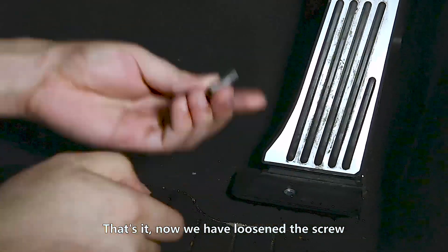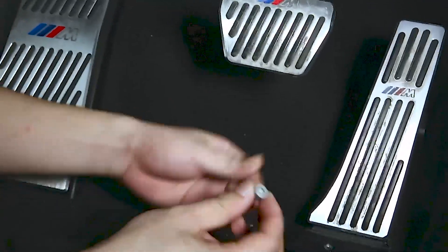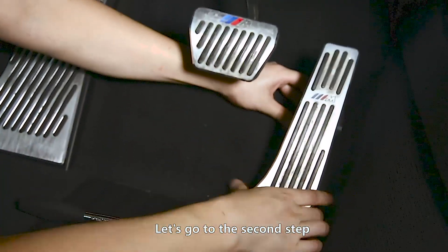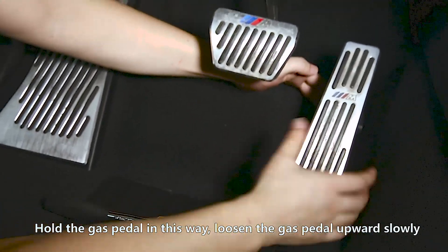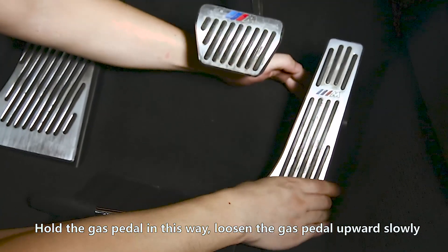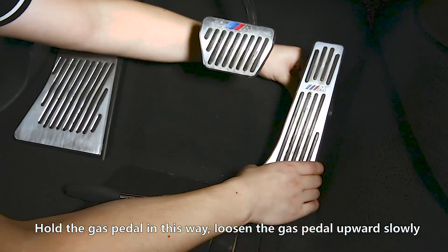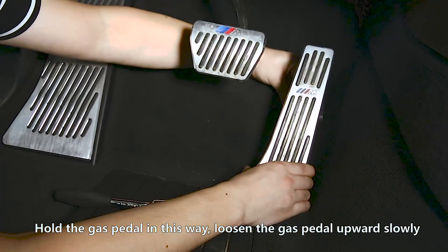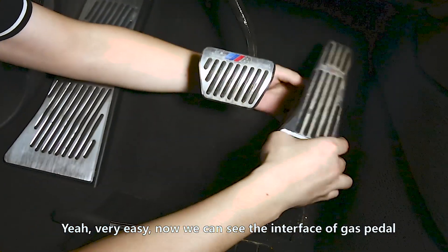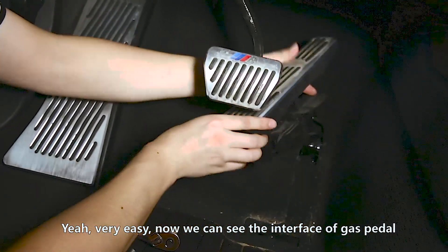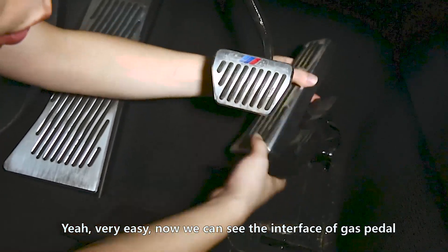Now we have loosened the screw. Let's go to the second step. Hold the gas pedal in this way. Loosen the gas pedal upward slowly. Very easy. Now we can see the interface of the gas pedal.